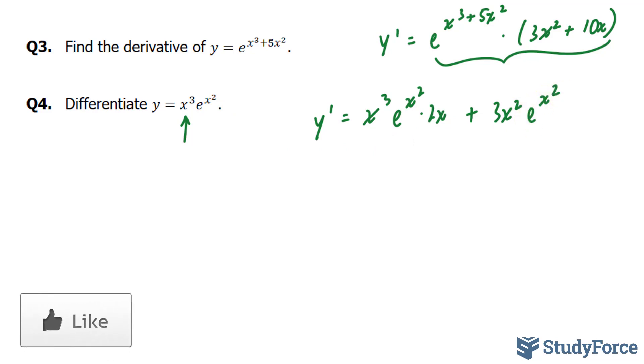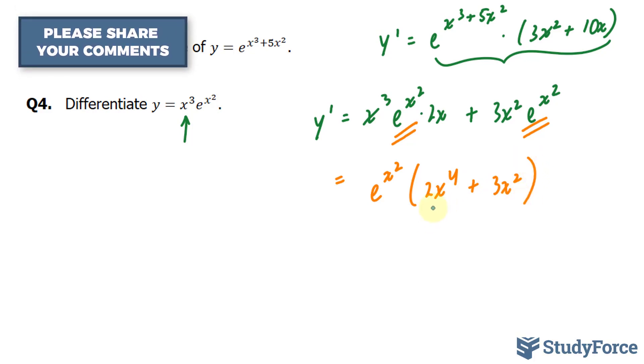Now I can factor out the following where I end up with e^(x^2). And this step is totally optional. Technically you're done after this. 2x times x^3 is 2x^4 plus 3x^2.